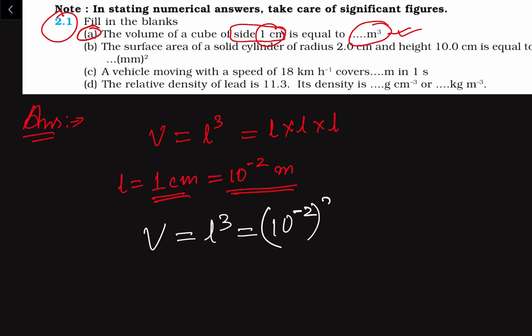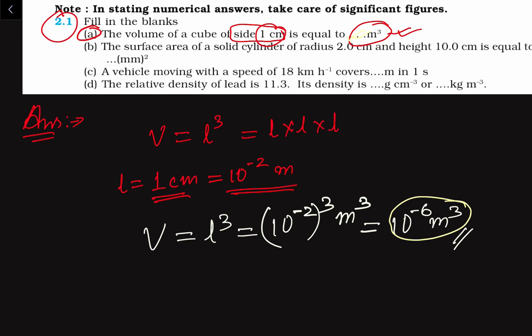The unit will be m³. So 10 to the power minus 2, whole cubed equals 10 to the power minus 6 meter cube. This is the answer to the first part, which you have to fill in the blank.